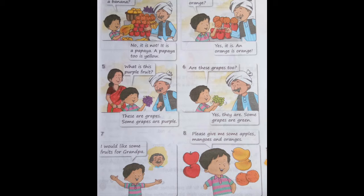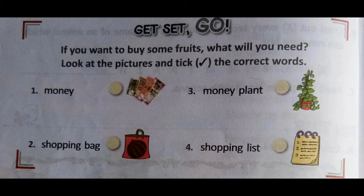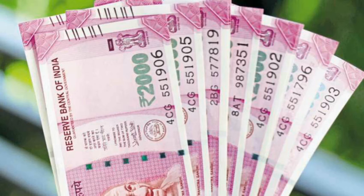Children, you all know how Amman was able to identify bananas, how apples look, how papayas look, how oranges look, and also how grapes look. He understood that some grapes are purple and some grapes are green. We also did a small activity — when we want to purchase fruits from the fruit shop, what will we need? Yes, we learned that first we need money.